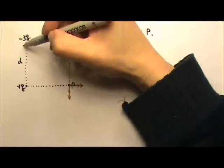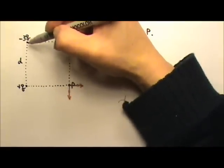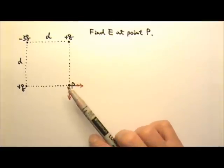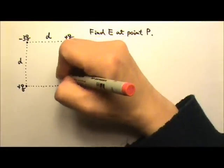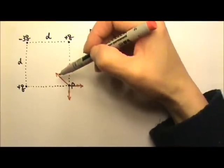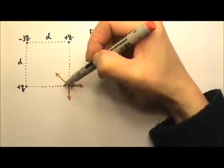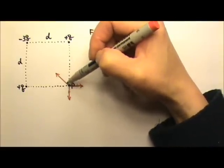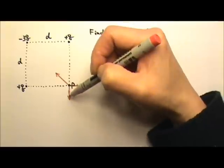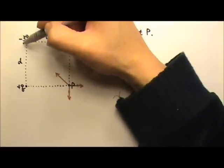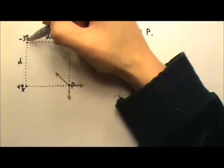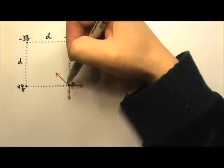The third charge, negative 3Q, gives the electric field that goes into the negative charge, that way. It may not be obvious whether this electric field has a larger or smaller magnitude compared to those two, because this charge has a larger magnitude, 3Q, but it is also farther away.